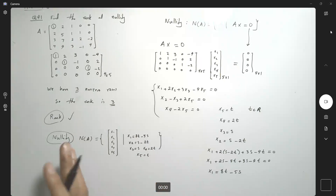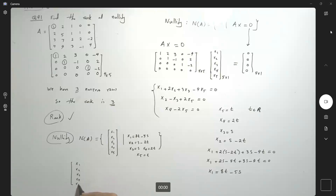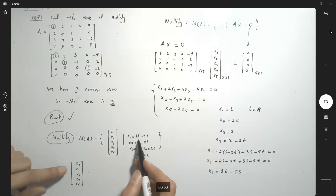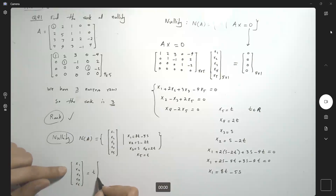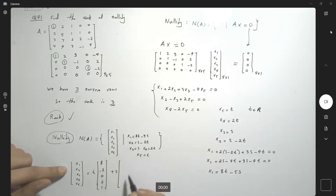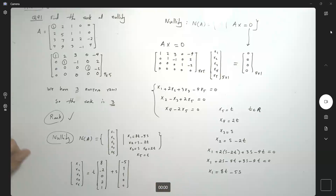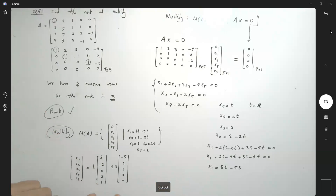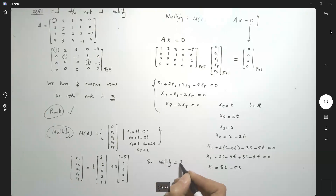We can write the solution set as N(A) equals the set of vectors (x1, x2, x3, x4, x5) where x1 is 8t minus 5s, x2 is s minus 2t, x3 is s, x4 is 2t, and x5 is t. This can be written as t times (8, negative 2, 0, 2, 1) plus s times (negative 5, 1, 1, 0, 0). So the null space is spanned by these two vectors, meaning the nullity is 2. We found the rank is 3 and the nullity is 2.